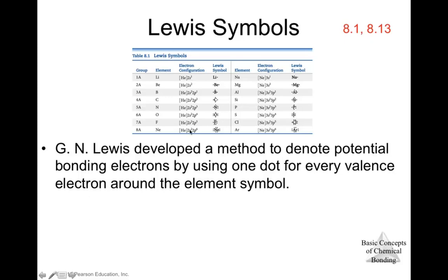Finally, family eight — the noble gases. We write eight electrons around the element symbol, which gives us four pairs. For neon and argon, we write the symbol with four pairs of electrons, representing eight electrons total.